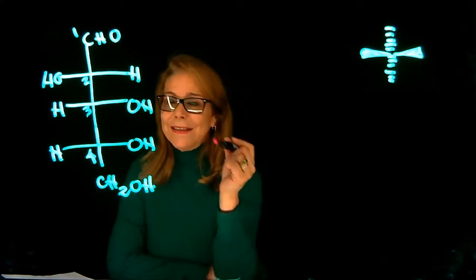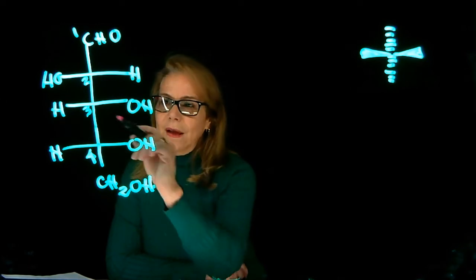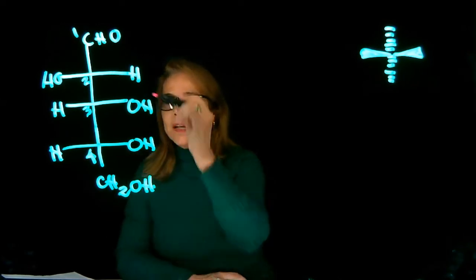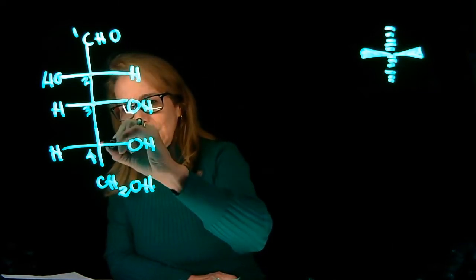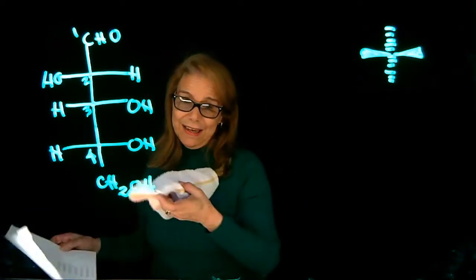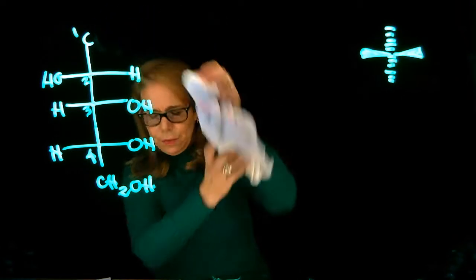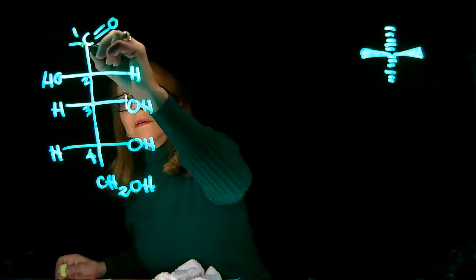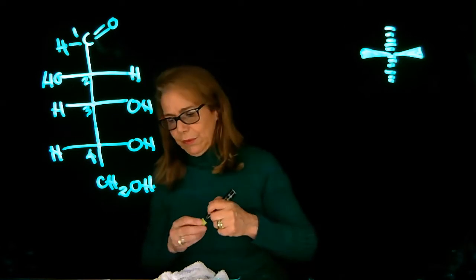Carbon 2 is a chiral center. We know that it has four different constituents. Also carbon 3 is another chiral center, and carbon 4 is another chiral center. So we have three chiral centers. Also, carbon 1, which is the aldehyde functional group, I'm going to draw it more explicitly, because we want to remember this for when we assign priorities. Now we're ready to go.